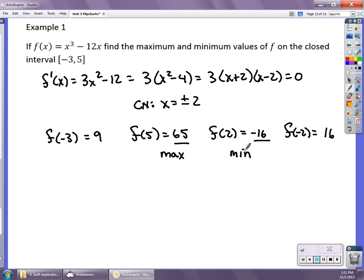And what we would say, or the way we would speak of this, is 65 is the maximum of this function f(x) on the interval between -3 and 5. And -16 is the minimum value of the function on the same interval.